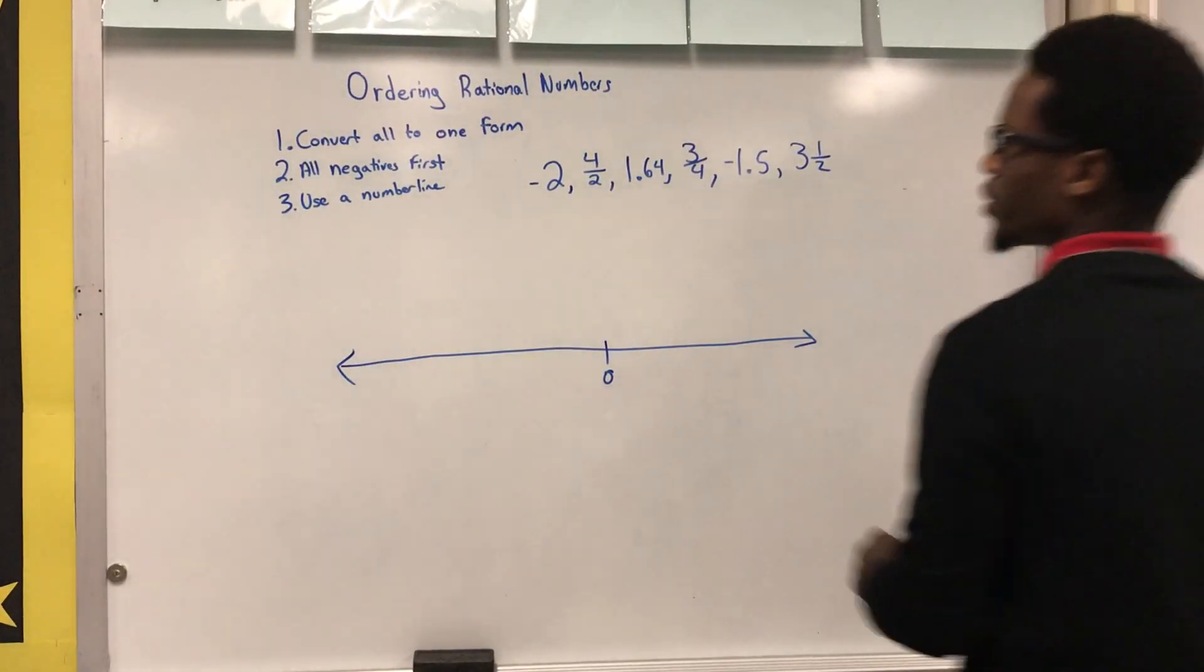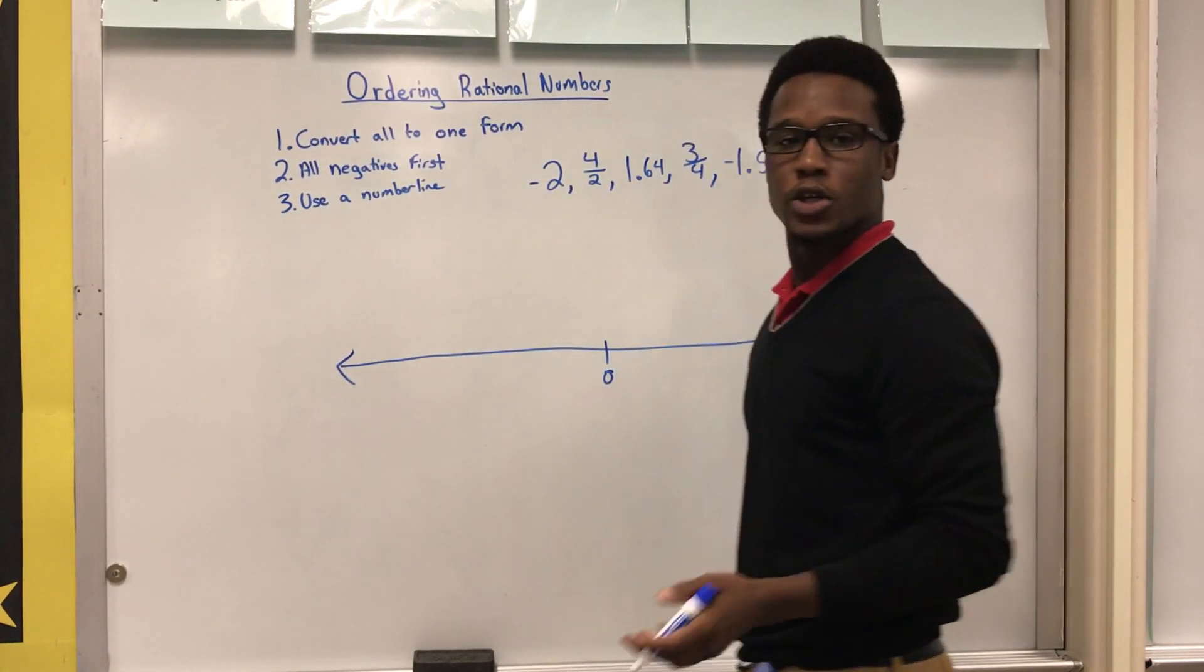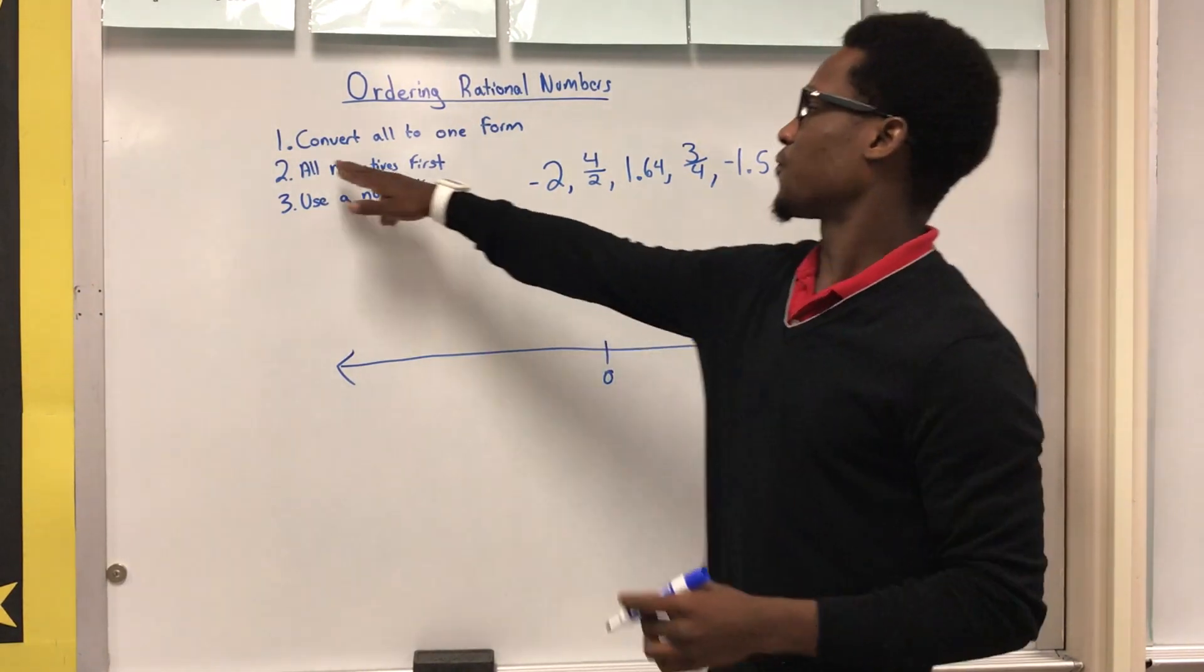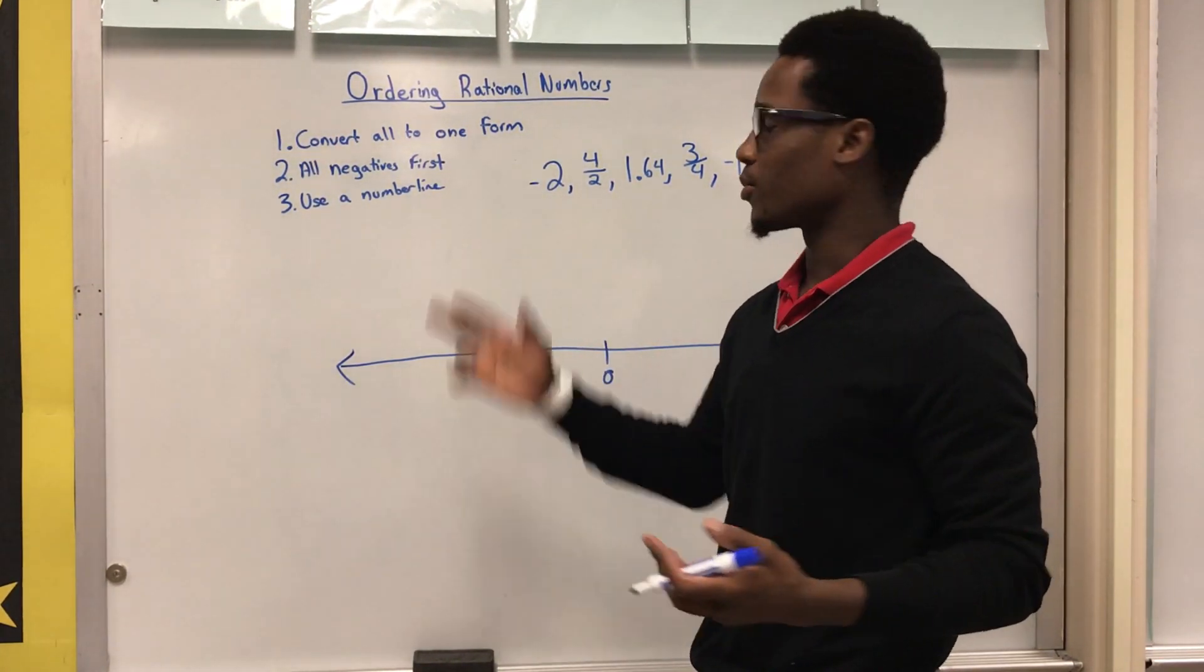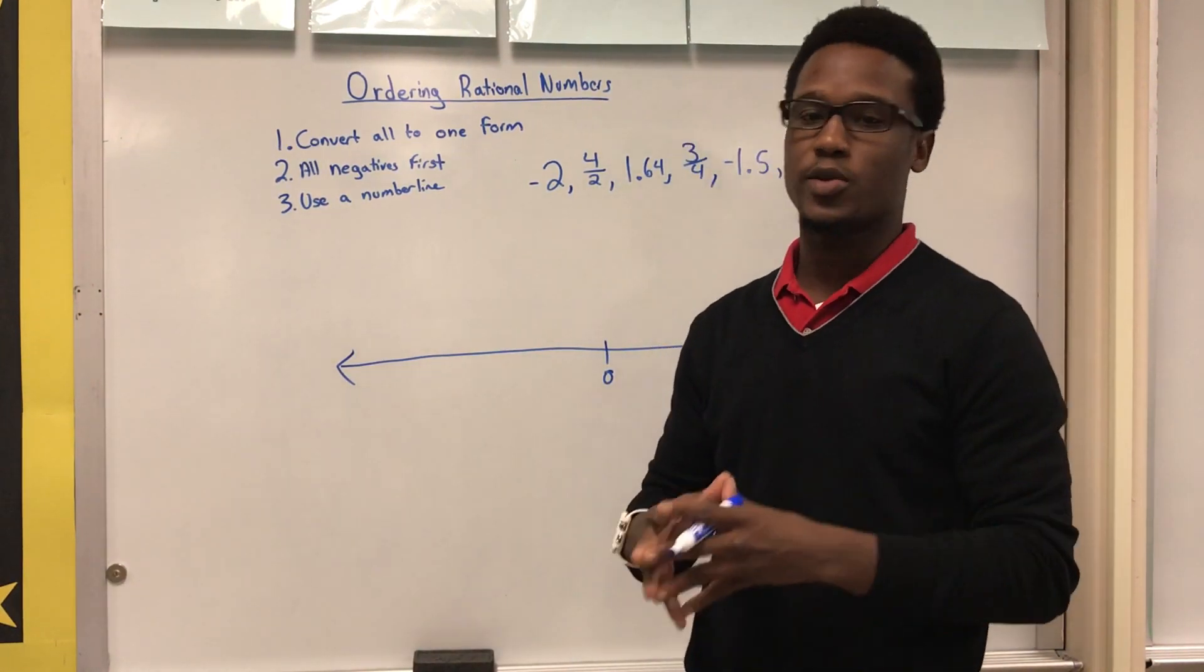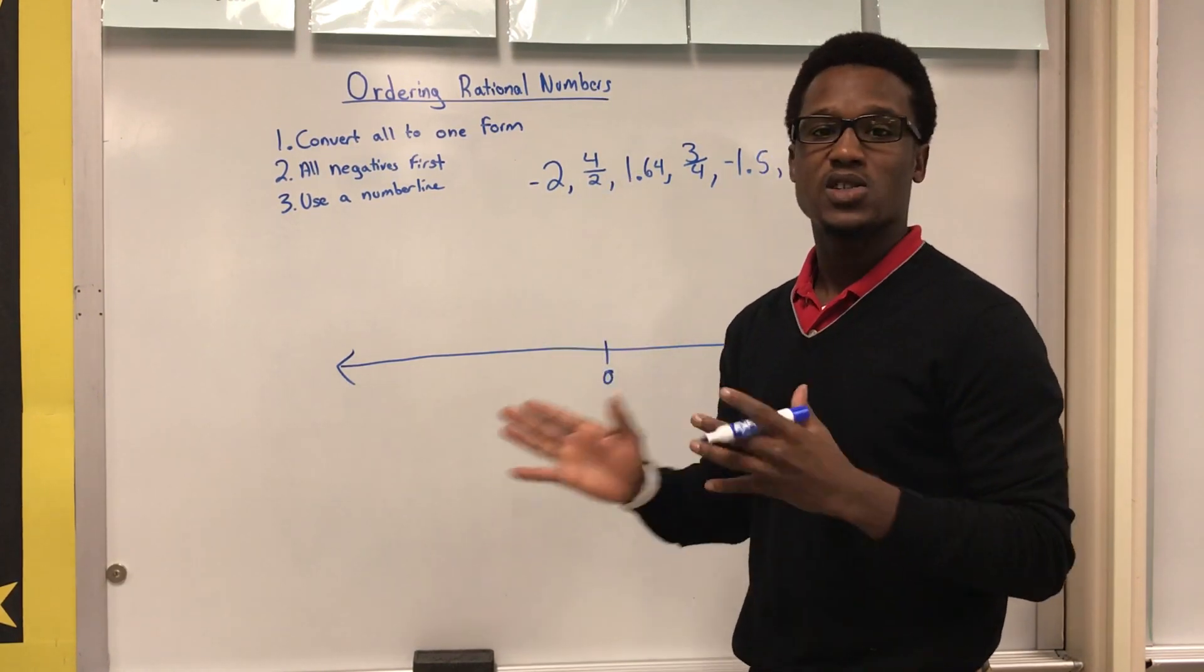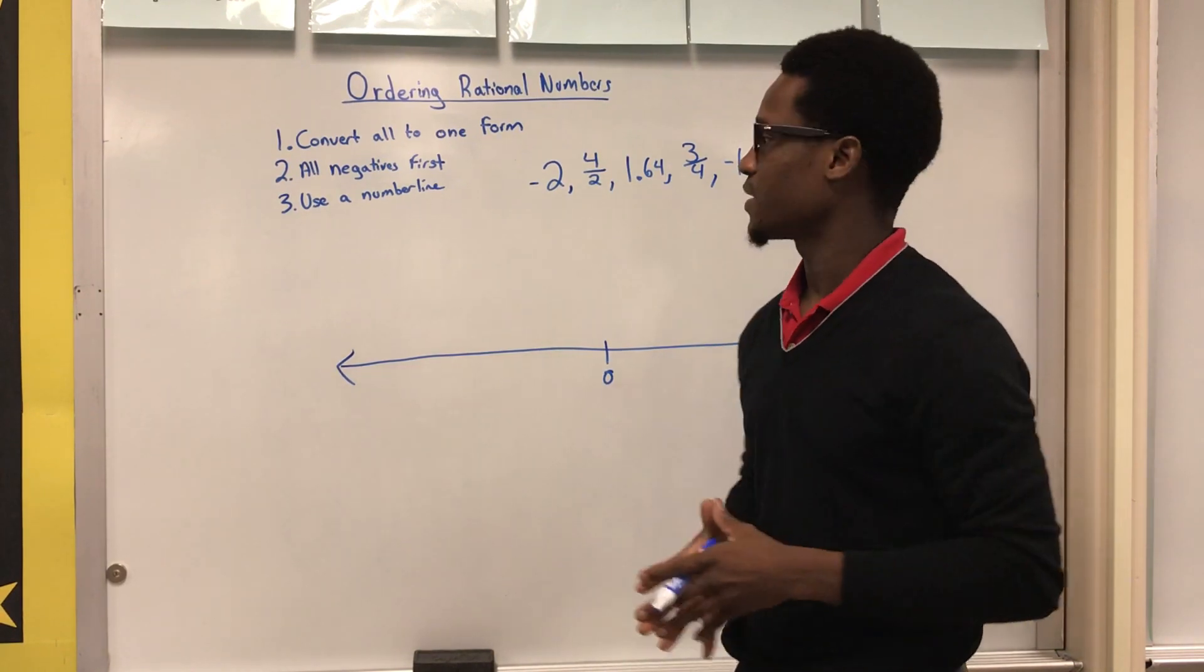Okay, so today we're going to order rational numbers, just putting them in order from left to right. The first thing you have to think about is you want to convert all of them to one form, whether that's all fractions, all decimals, or all percents. Personally, I feel comfortable ordering things when I have them all in fraction form, but you choose which one works best for you.